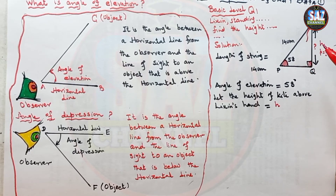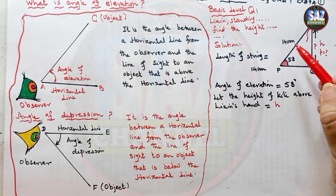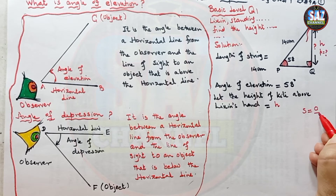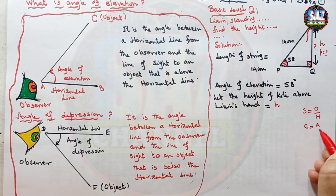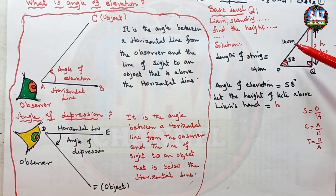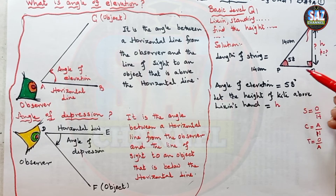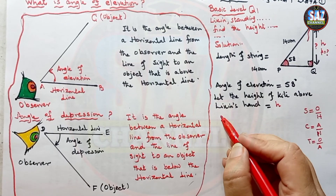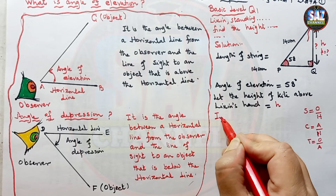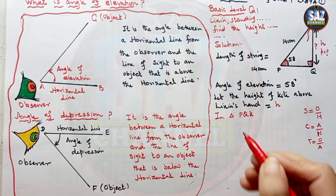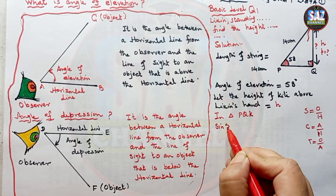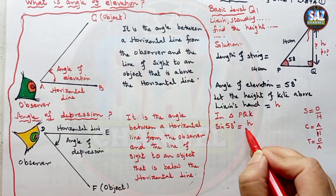According to the need, we apply the basic trigonometric ratio. Recalling the formulas: sine equals opposite upon hypotenuse, cosine equals adjacent upon hypotenuse, and tangent equals opposite upon adjacent. Since the hypotenuse is given as 140 meters, we use sine. Cosine is not used because the adjacent is not given. So in triangle PQK: sine 58° = H / 140.